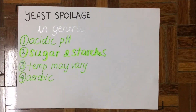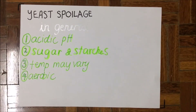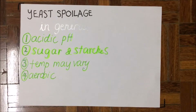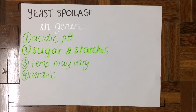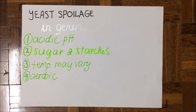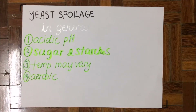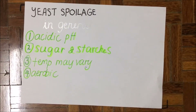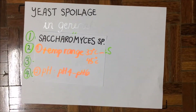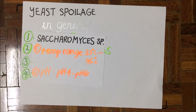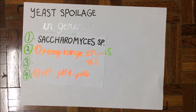For yeast spoilage, yeast survives in slightly acidic pH and needs sugar and starches to survive. The temperature range may vary, and it grows in aerobic conditions. Saccharomyces species has a temperature range of 32°C to 45°C and a slightly acidic pH of 4 to 6.